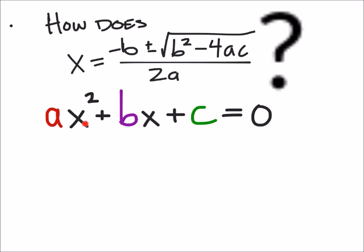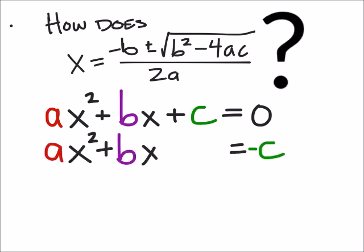We need to isolate x squared and the x with their respective coefficients. So as you can see right here, all I've done is I've subtracted c from both sides of the equation. I guess I didn't really show that in there, so that will do. And that's how we get this ax squared plus bx equals negative c now.